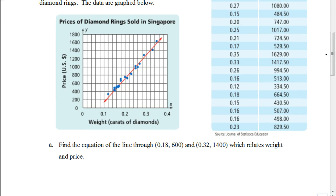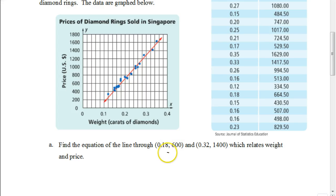The problem asks us to find the equation of the line through the points (.18, 600) and (.32, 1400), which relates weight and price. The .18 represents the independent variable — the carat weight — and the y-value represents the cost in US dollars. A .18 carat diamond costs $600, while a .32 carat diamond costs $1,400. Our first step is to figure out the slope.